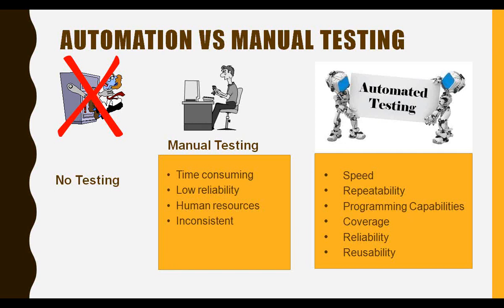Manual testing has low reliability, limited human resources, and inconsistency — everyone knows about these things. With automation testing you get speed, repeatability, and you can set it running and check results the next morning. Additional factors include programming capabilities, test coverage, reliability, and reusability. These are all the factors we've discussed.